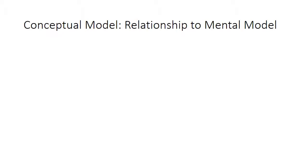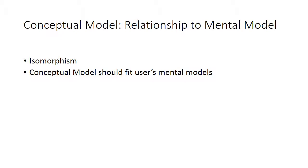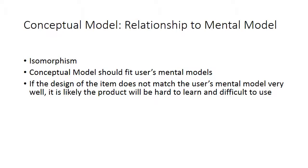The relationship between the mental model and the conceptual model is very important because one of the major ways people learn is through a process called isomorphism — that is, by mapping ideas they're trying to learn with what they already know. It's putting things into a one-to-one correspondence. So if you have a good isomorphism between the conceptual model of the instruction you've designed and the user's mental models, they'll be able to map your expectations against their expectations and things will go smoothly.